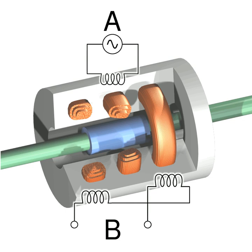The linear variable differential transformer has three solenoidal coils placed end-to-end around a tube. The center coil is the primary, and the two outer coils are the top and bottom secondaries. A cylindrical ferromagnetic core, attached to the object whose position is to be measured, slides along the axis of the tube.